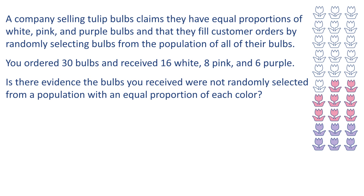We have one variable here, and that is color. That variable has three levels: white, pink, and purple. We're going to conduct a chi-square goodness of fit test to determine if there is evidence of any differences between the three population proportions. We'll be using the 5-step hypothesis testing procedure.